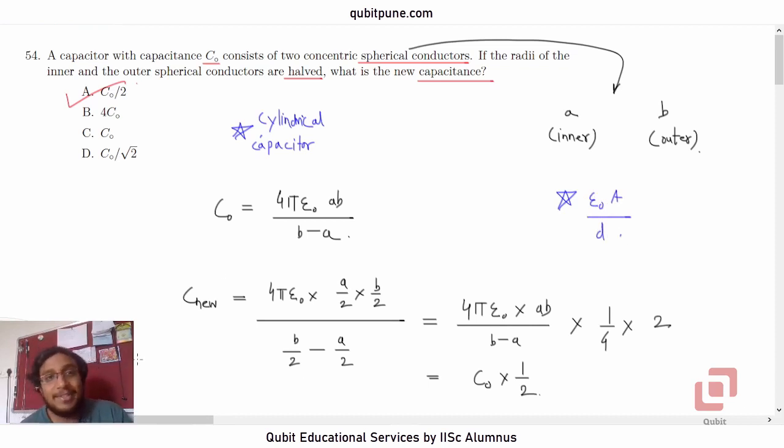The cylindrical capacitor expression involves natural logarithm. But anyways, that is 54th. Now let us go to 55 in our next video.